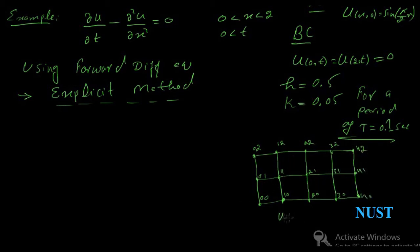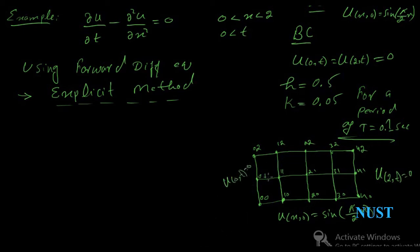Apply the initial conditions at the bottom layer and the boundary conditions on the right and left sides. There are six unknown points, such as nodes 11, 12, 21, 22, 31, and 32.